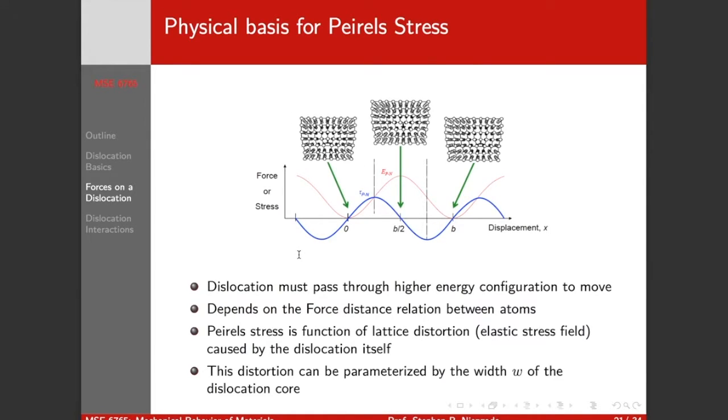So where does this come from? Well, as I move this edge dislocation, my extra half plane here, as I move it over one Burgers vector distance, I have to go through a higher energy configuration. My highest energy configuration is going to be at b over 2.